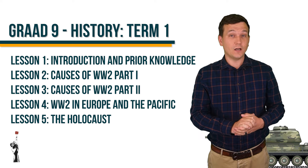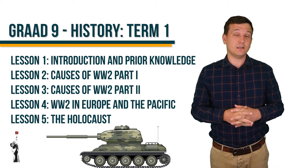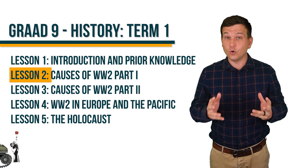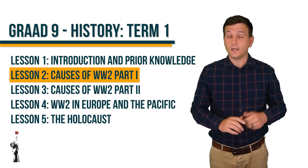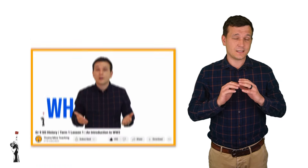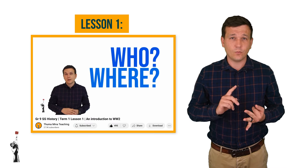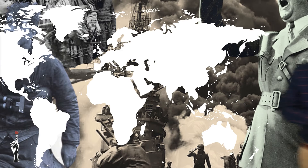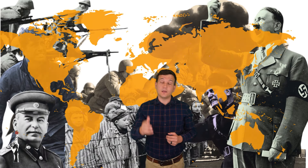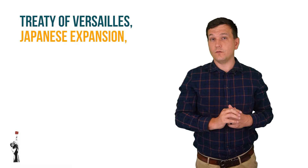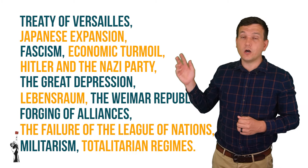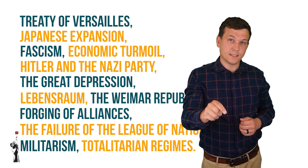Hello Grade Nines, and welcome to your second lesson for Term 1 Grade 9 History. In this lesson we are going to discuss the causes for the Second World War. In the first lesson we discussed the basics of the war — who, where, when — just to form a foundation for lessons 2, 3, 4, and 5. There were many reasons for the outbreak of the Second World War, but we're only going to tackle four of them in this lesson.